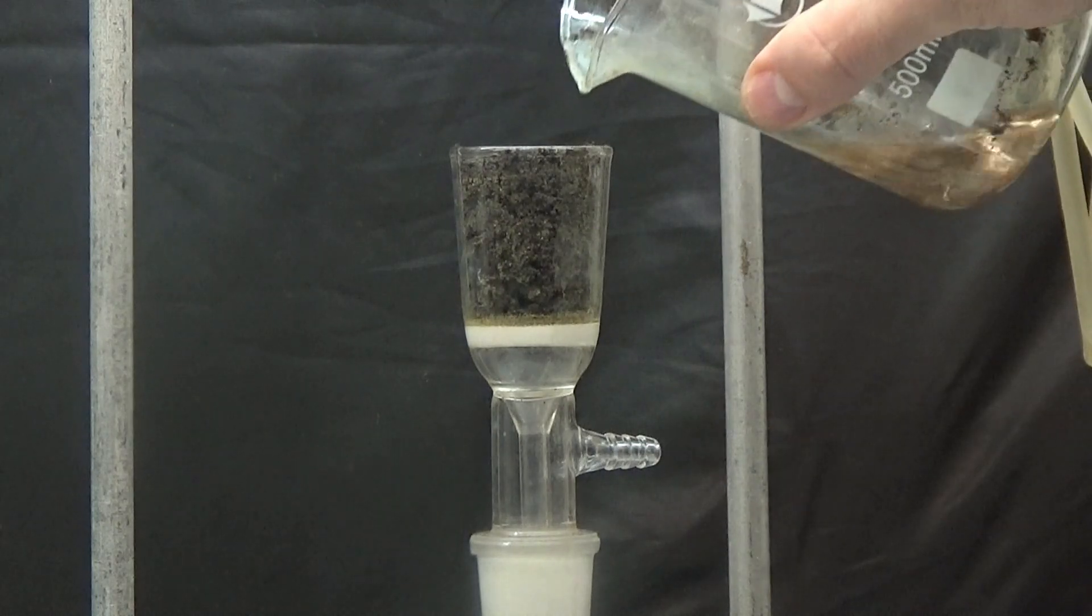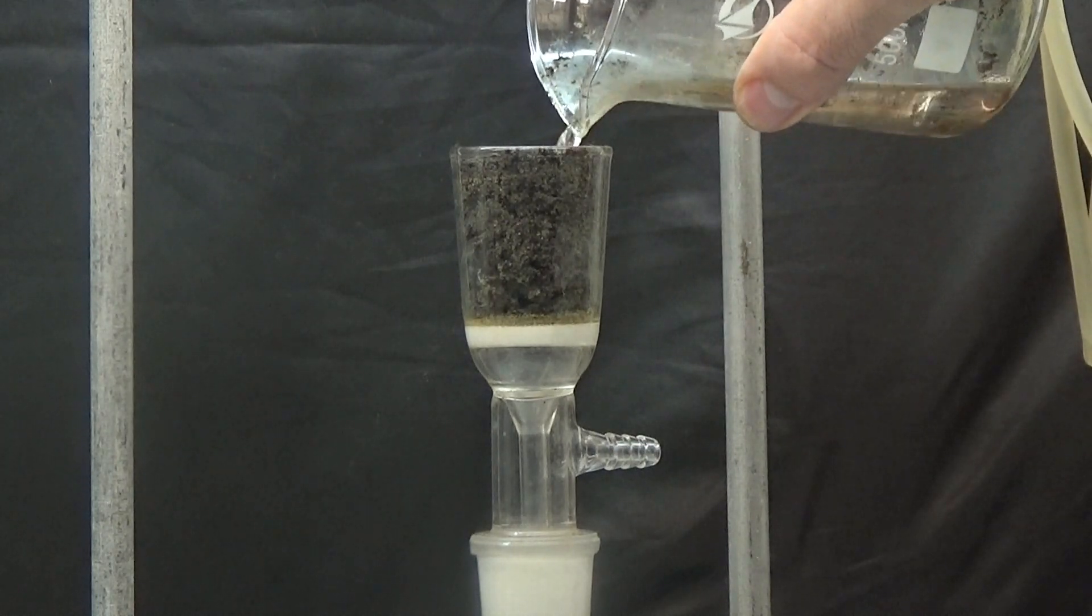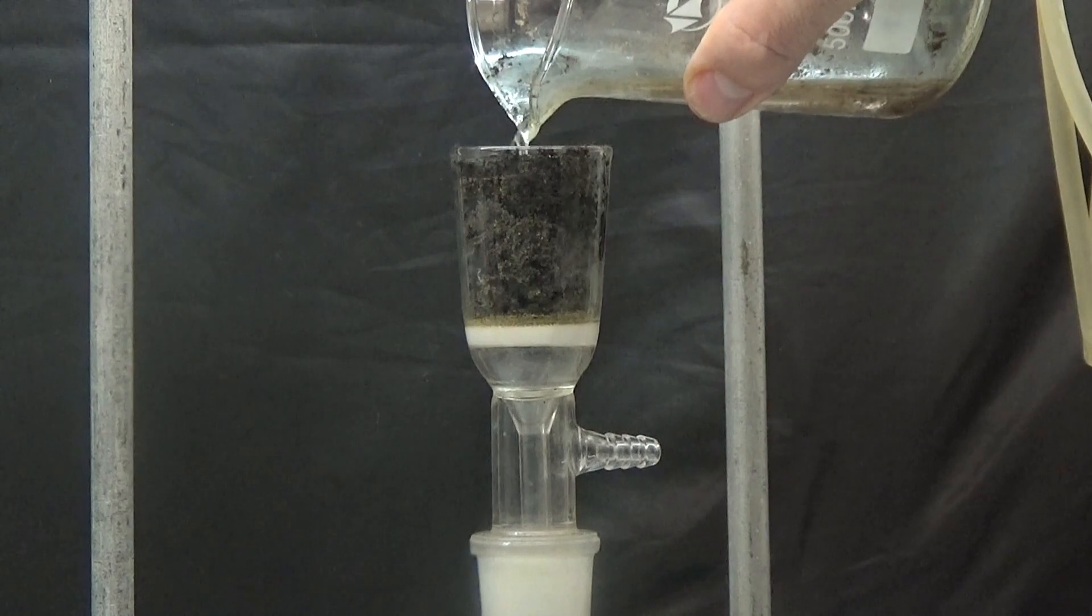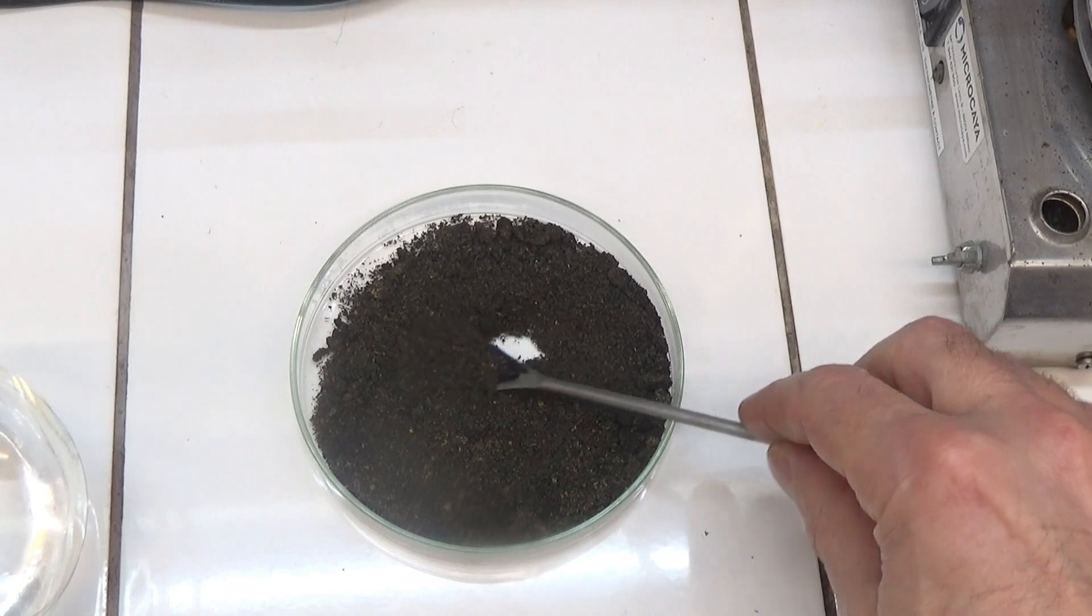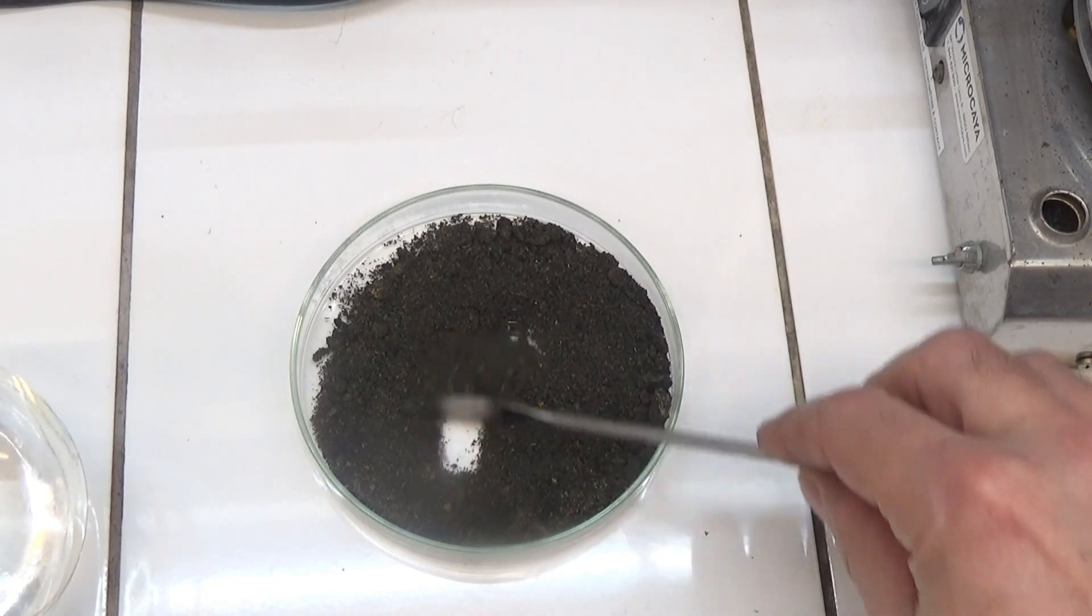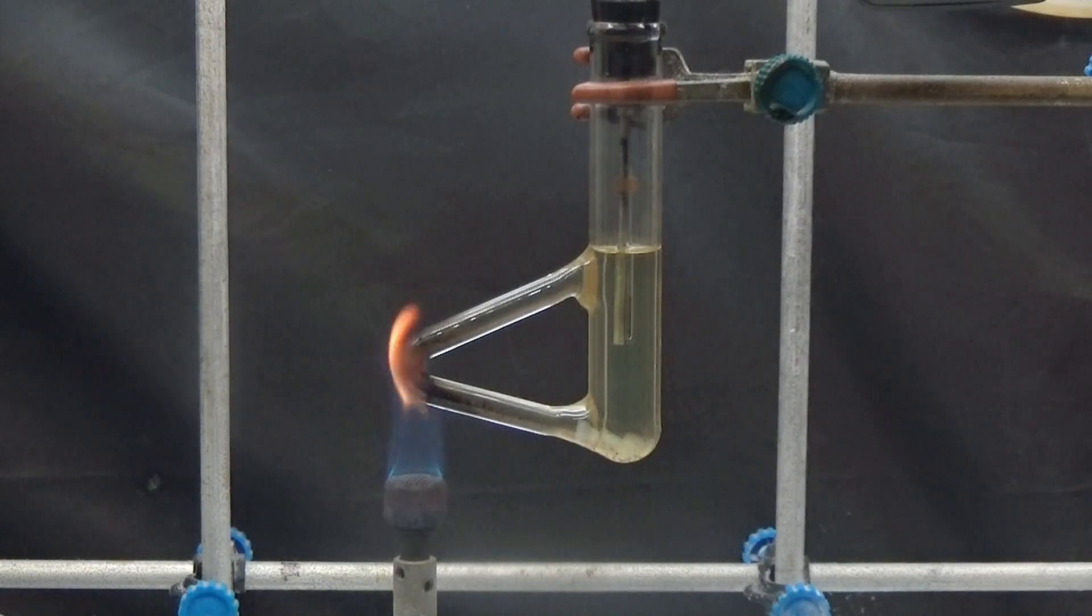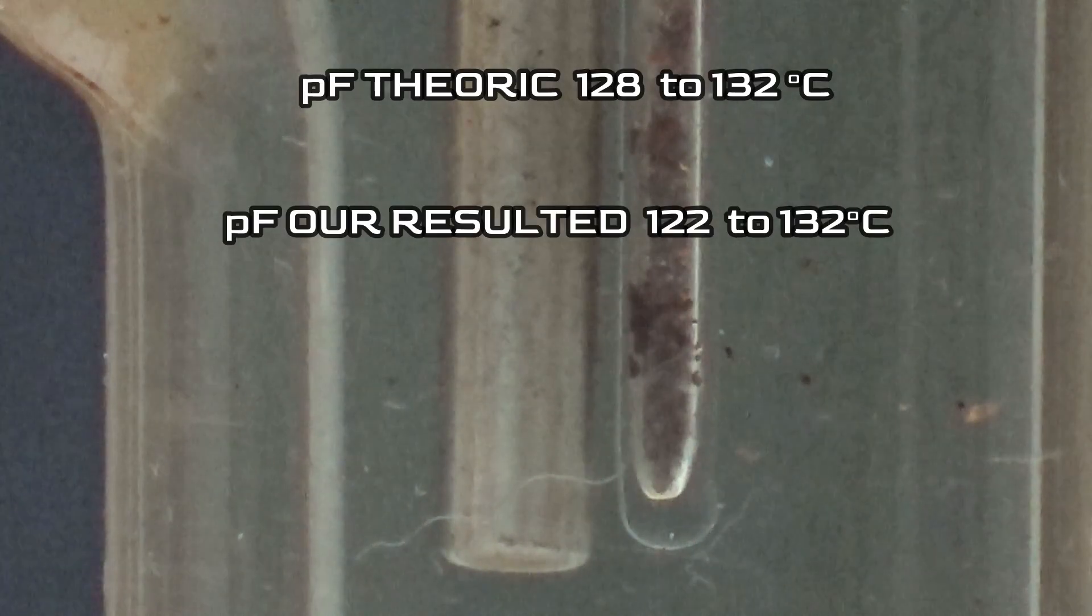With this distillation, we recover another harvest of crystals. We wash all the products obtained with cold hexane. Once the crystals are dry, we determine their melting point. Our test resulted in a temperature between 122 and 132 degrees.